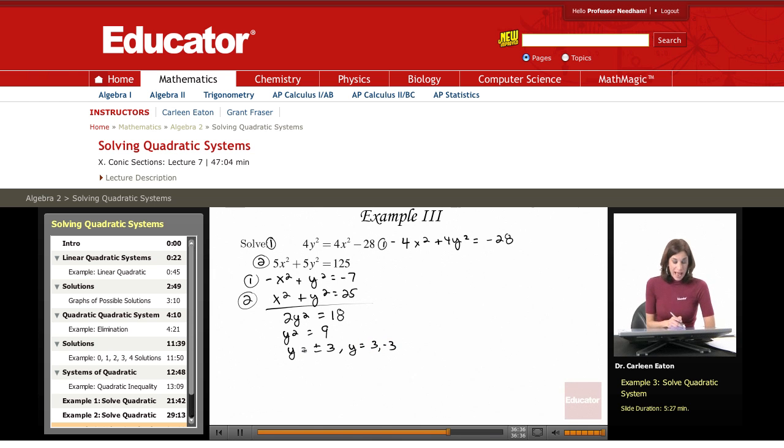Now, I need to go back and substitute into one of these equations when y equals 3, and figure out what x is. Then I need to see when y is negative 3, what is x going to be?